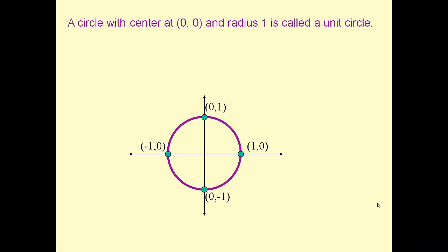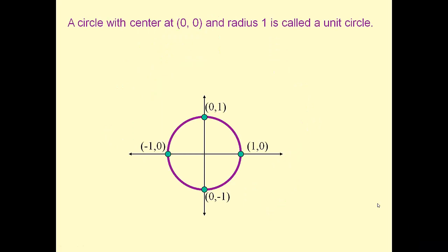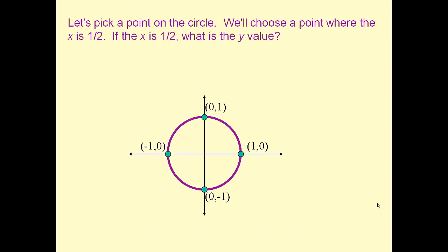The unit circle is defined as a circle with the center at the origin and a radius of 1. Everywhere on the circle is exactly a distance of 1 from the center. The equation of the circle from geometry would be x squared plus y squared equals 1 for any point on the circle. All points must satisfy this equation.